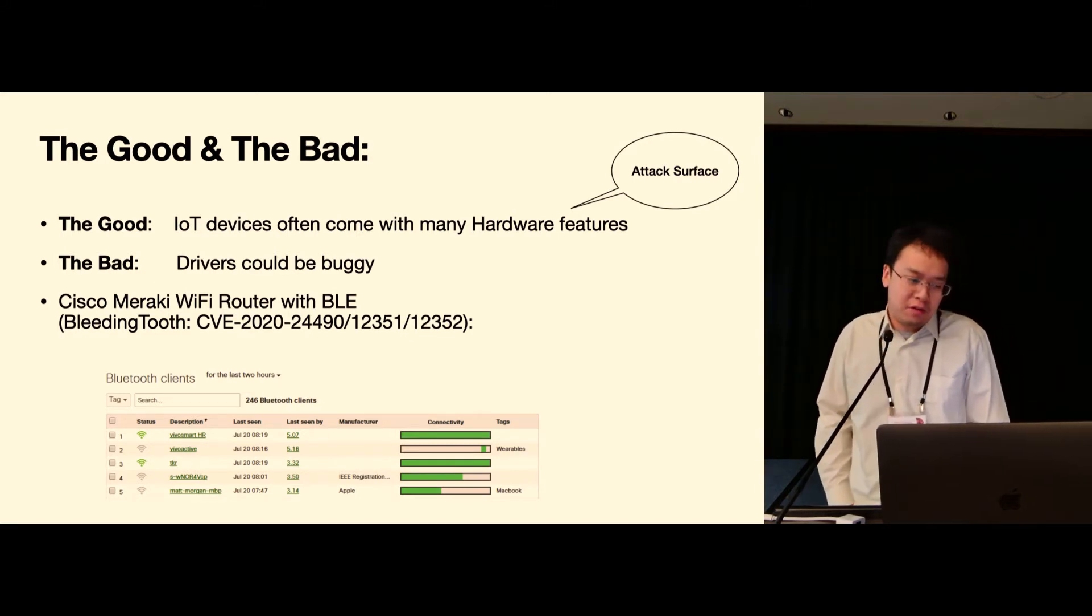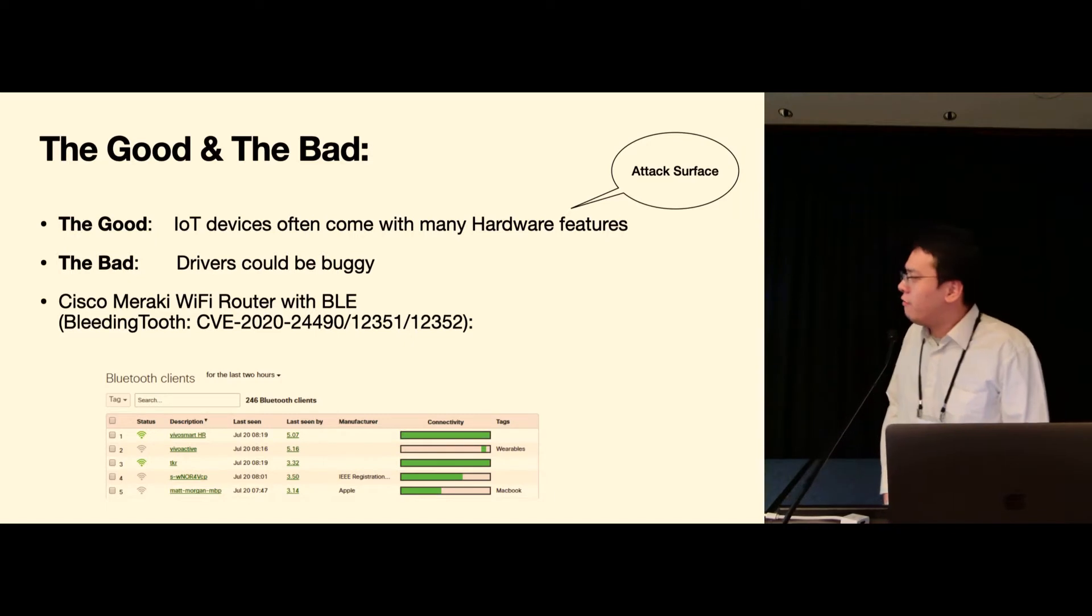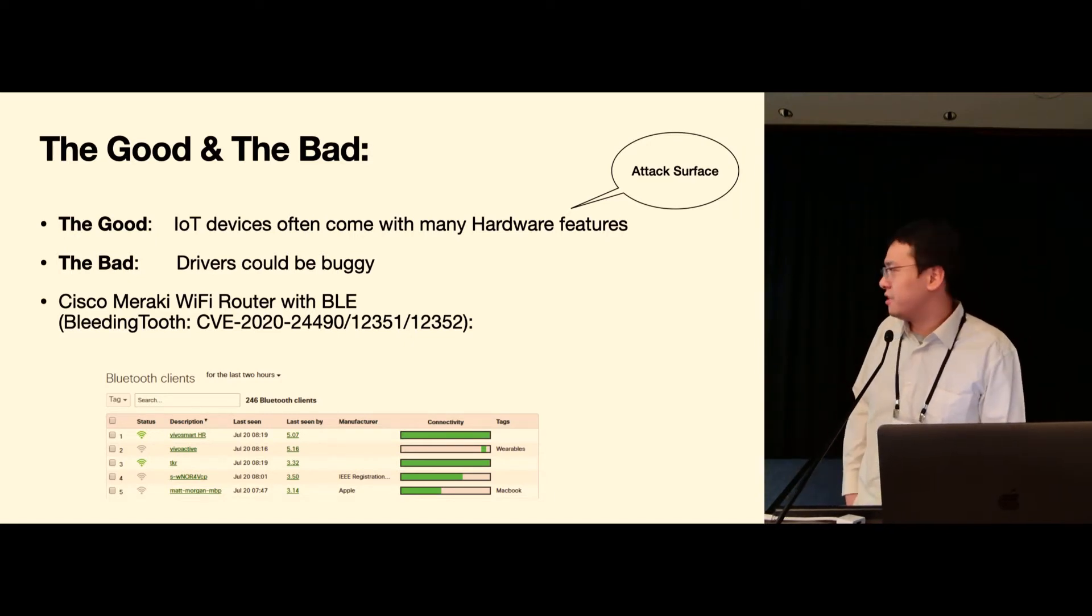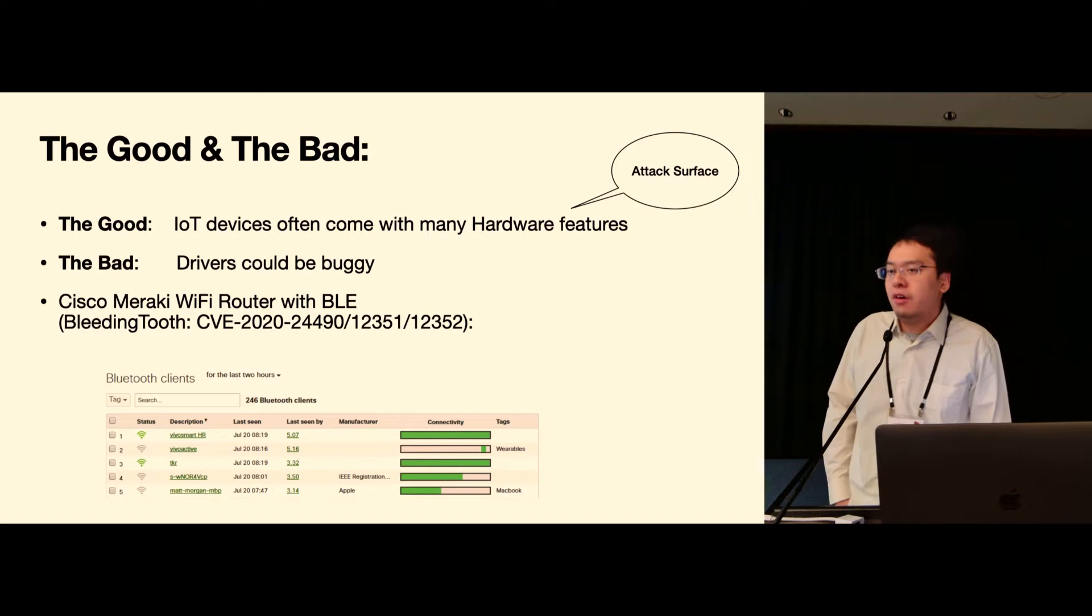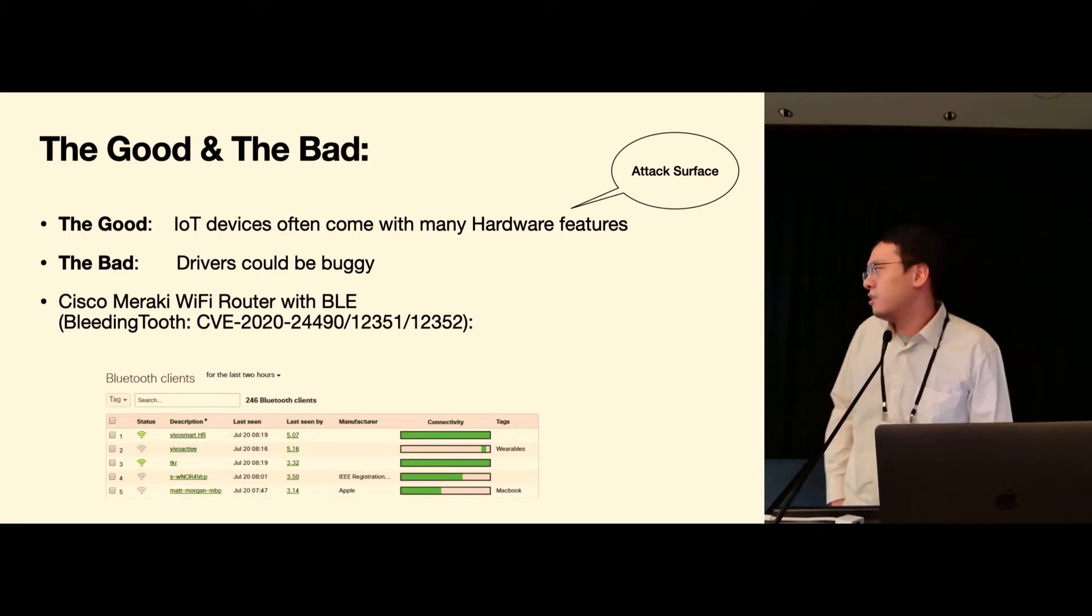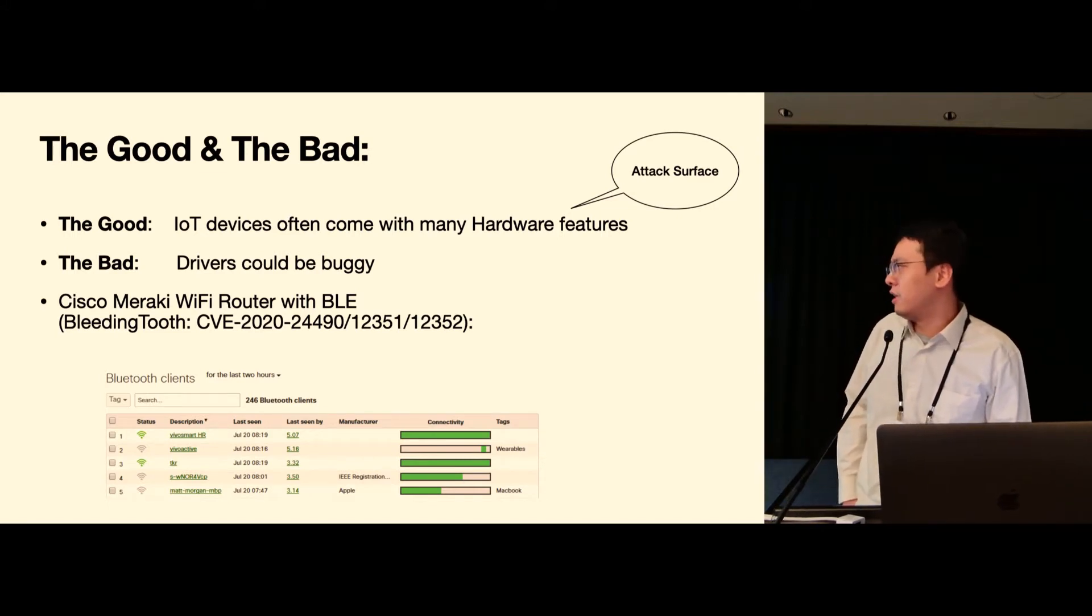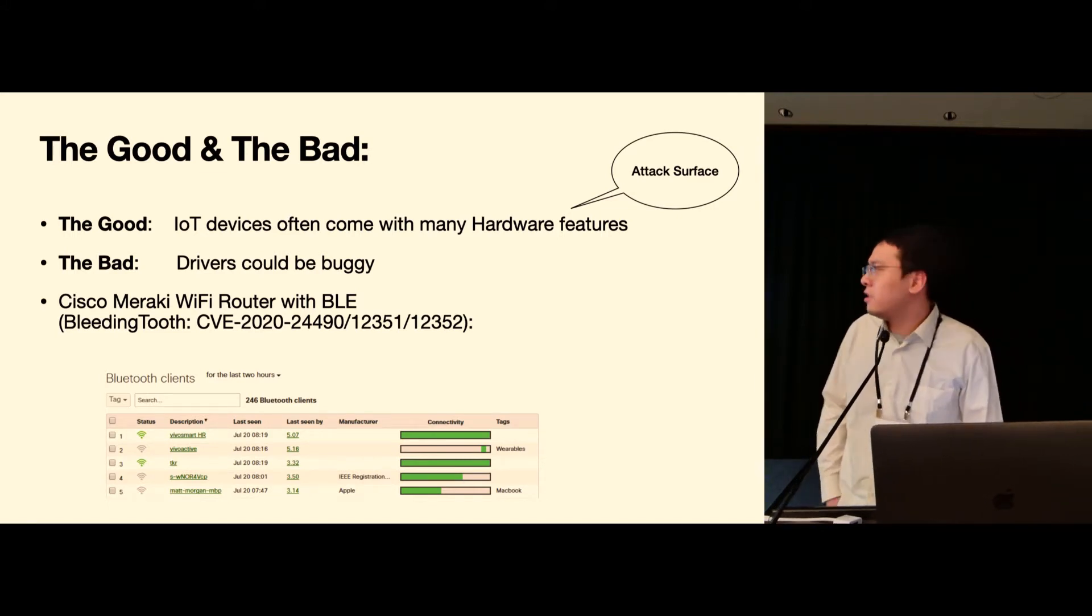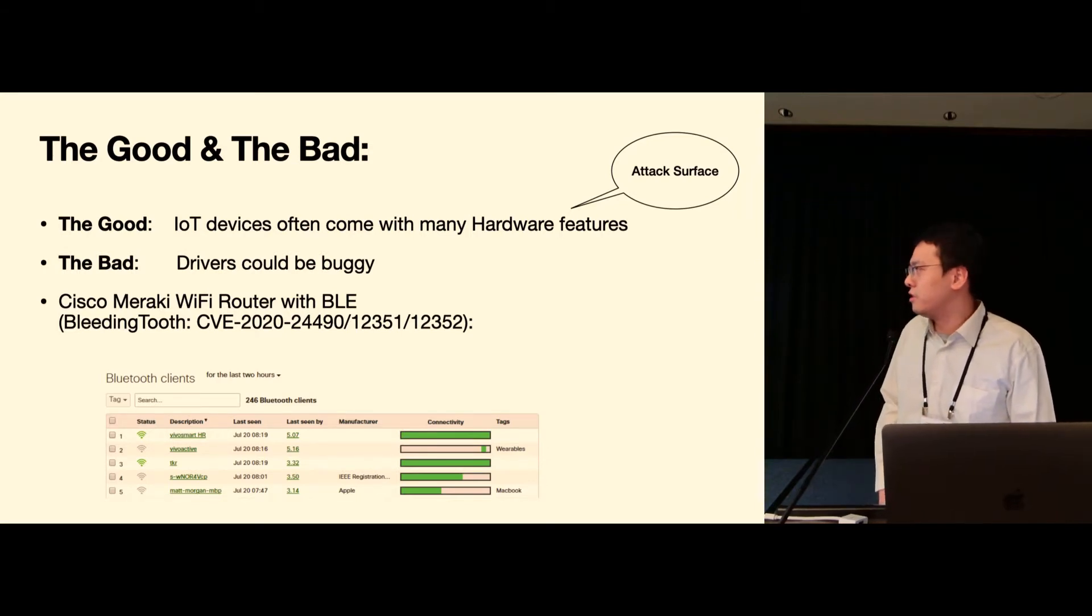For example, in this Cisco Meraki Wi-Fi router it also comes with a fully functioning Bluetooth stack which might be useful for some large organizations to locate or manage their devices. But for individual users like us we might never want to use this feature at all, and even worse it might bring along all the bugs related to the Bluetooth stack which could potentially turn all our routers into some hackers' Bitcoin bot.